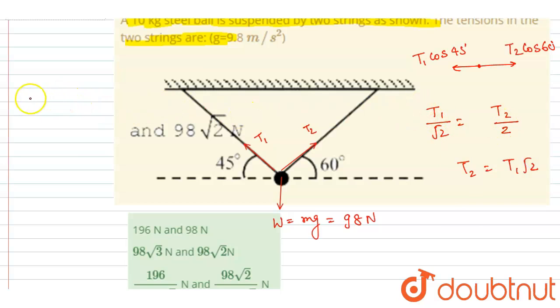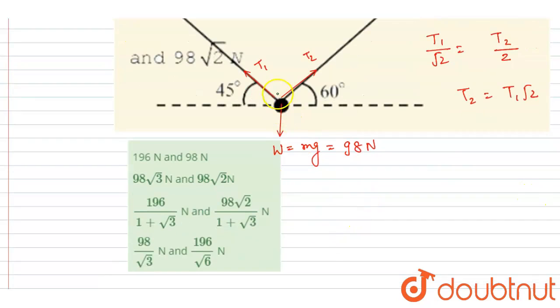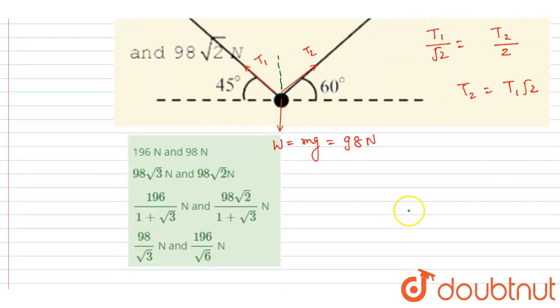Now if you see in the vertical direction, the two components will be there. Now it will be sine 45 and sine 60. So I will write the vertical forces are T1 sine 45 and T2 sine 60.